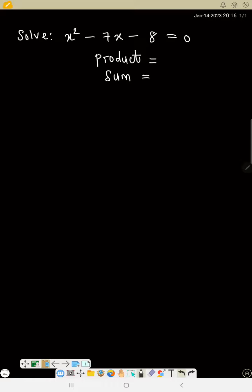So to get the product, we need to multiply the first term by the last term. Now that will give us 1x squared times minus 8. Take note of the sign. So 1x squared times minus 8, that will be minus 8x squared.